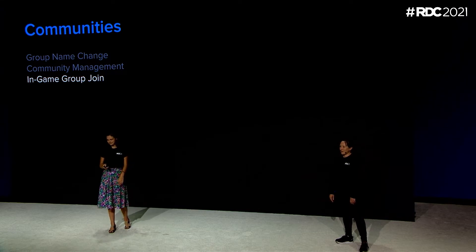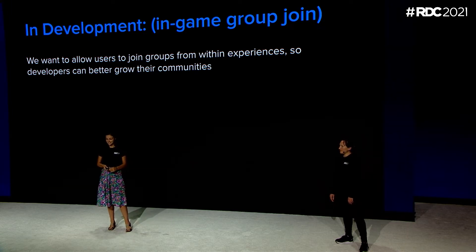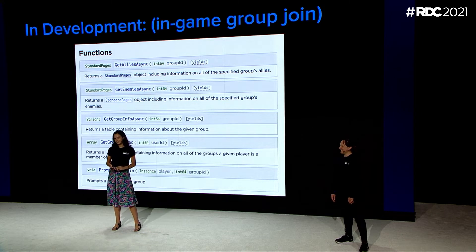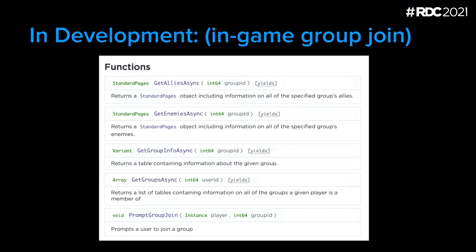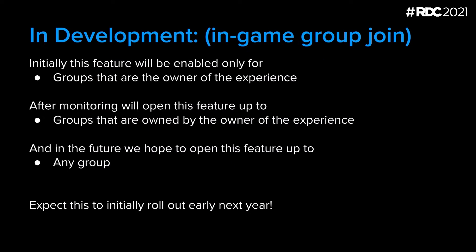And finally, in-game group join. We want to allow users to join groups from within experiences so developers can grow their communities more seamlessly. This API will look a lot like other prompt functions, taking in a player instance and a group ID. Based on the success of this request, you'll be able to seamlessly offer experience perks or benefits when users join your group. Initially, this feature will be enabled only for groups that are the owner of the experience. After monitoring our initial rollout, we intend to open it up to groups owned by the owner of the experience for user-owned games. Long-term, we want to support joining any group from any experience, making sure we do that mindfully and with the right settings and permissions in place.